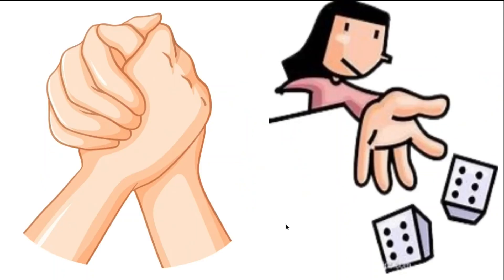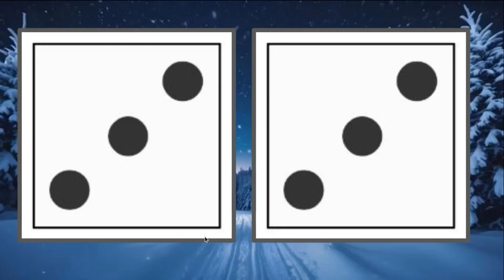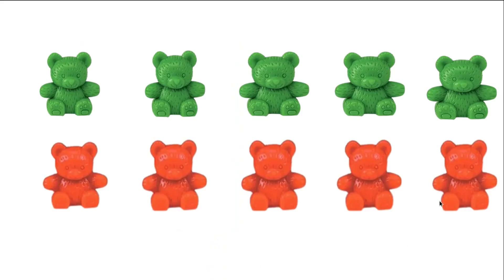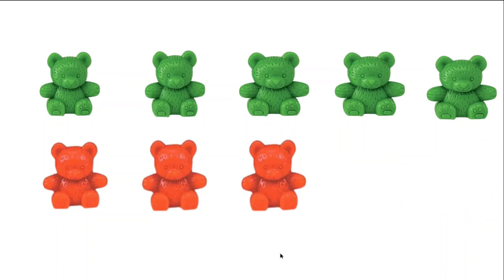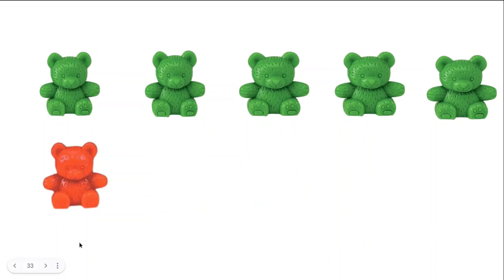Get ready. Shake, shake, shake. How many dots are on my dice now? Yes, six. But I have ten. How can I turn that into six? What do I need to do? Did you say take bears away? Well, you're correct. I have ten bears and I need to turn it into six. I'm going to take bears away and count backwards until I get to six. Ten, nine, eight, seven, six. Now I have six. Great job, boys and girls.